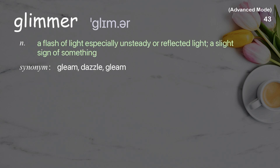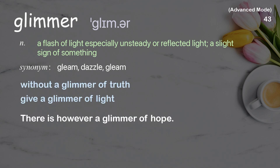Glimmer: A flash of light, especially unsteady or reflected light; a slight sign of something. Examples: Without a glimmer of truth, give a glimmer of light. There is, however, a glimmer of hope.